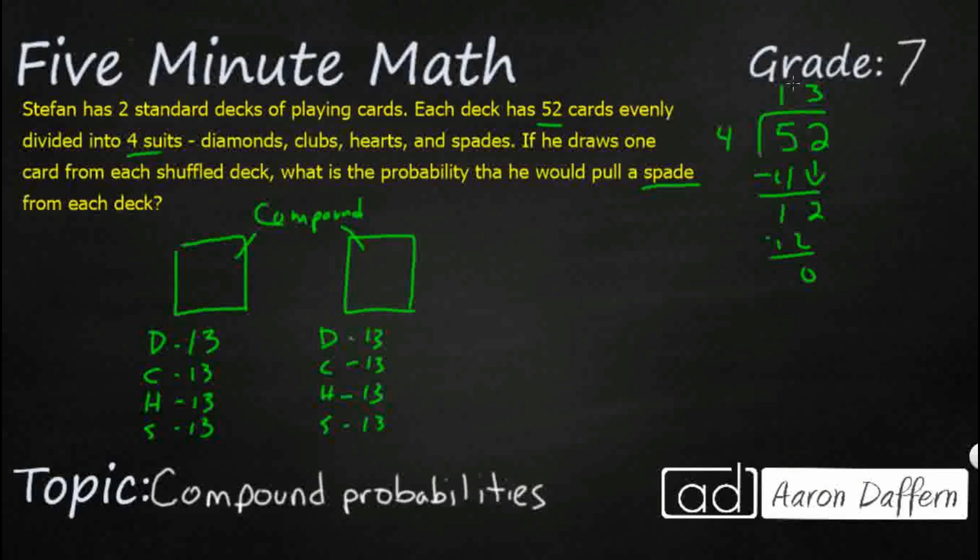Well, let me see. The spades from this deck is going to be 13/52. Same with this one. But we know both of those actually reduced to one fourth. So, let's just go ahead and multiply one fourth times one fourth. And that is going to get us our probability of one-sixteenths.